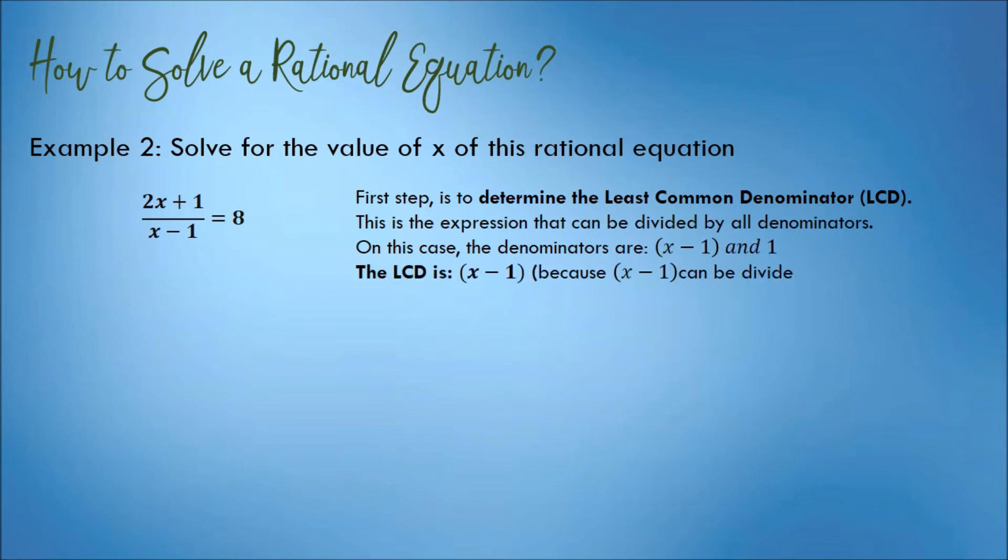There is 1, because the denominator of 8 is 1. Their LCD is x minus 1, because x minus 1 can be divided by x minus 1, and can be divided by 1.